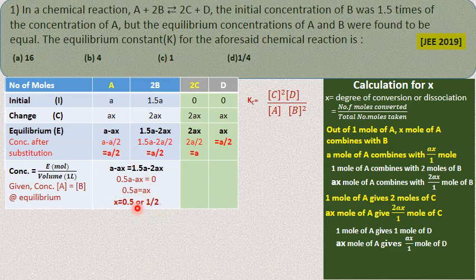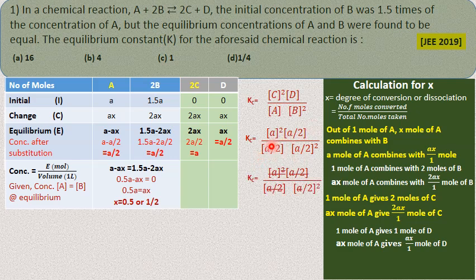After substituting x = 0.5, equilibrium concentrations come out as: A is A/2, B is A/2, C is A, D is A/2. Substituting into the Kc expression and simplifying — the A/2 terms cancel — we get Kc = 4. So the answer is 4, which is option B.